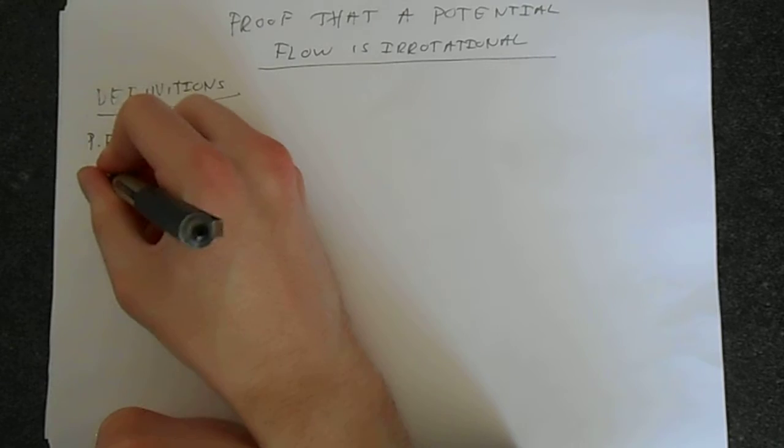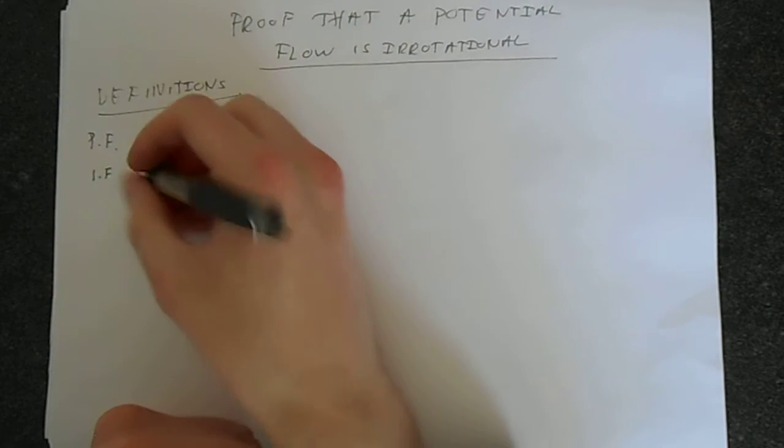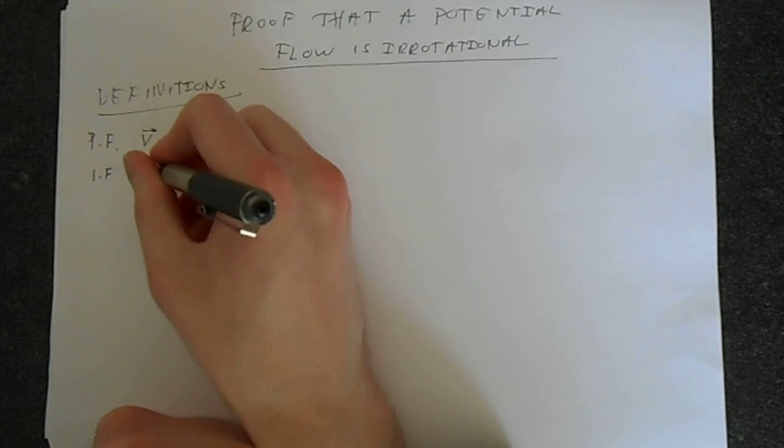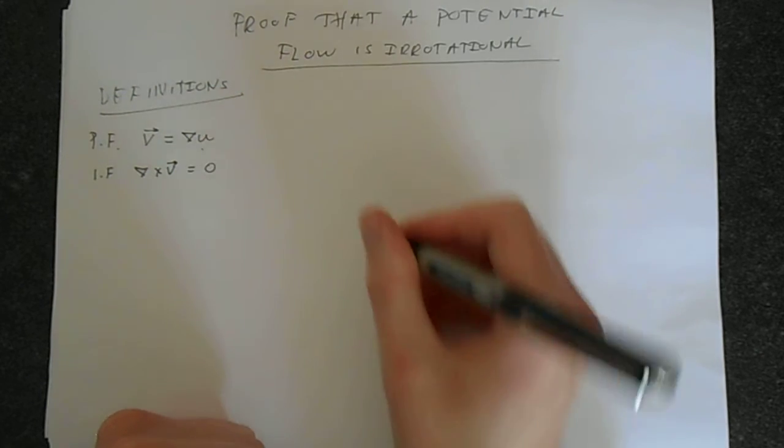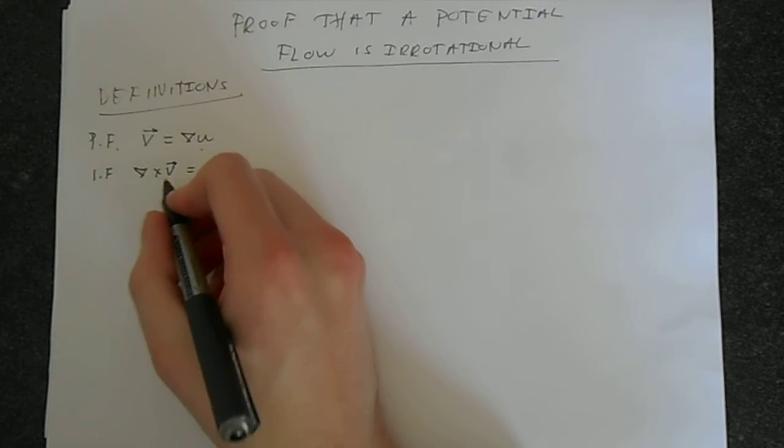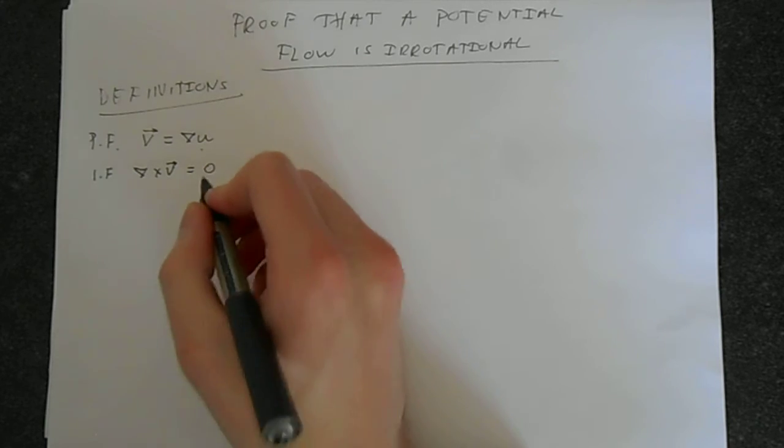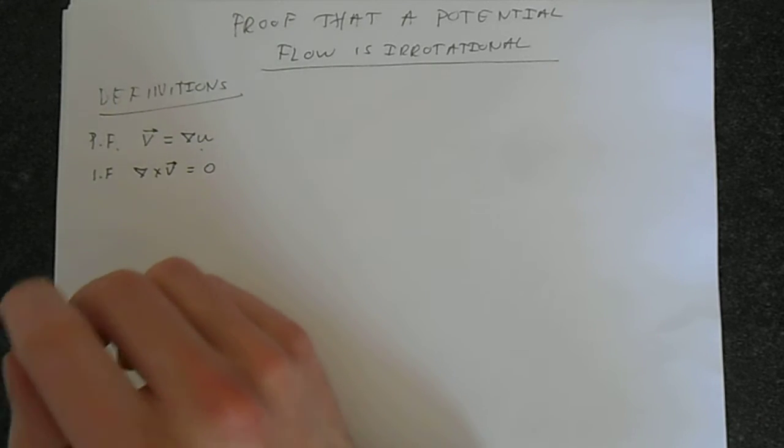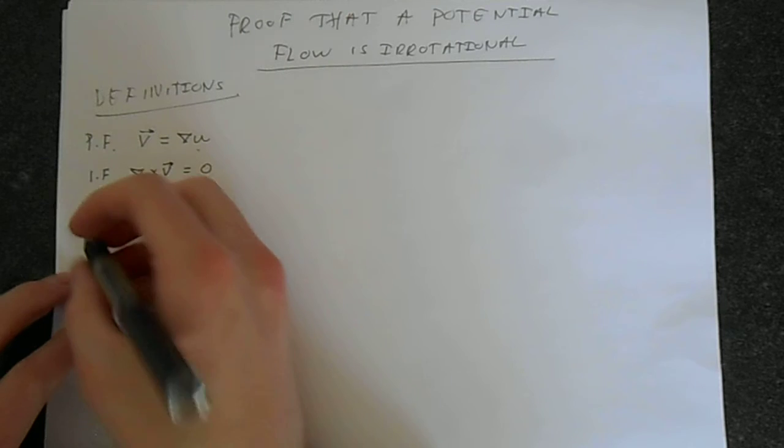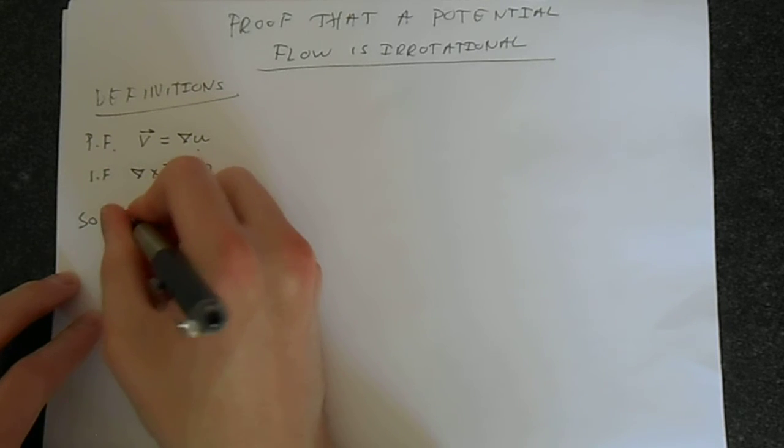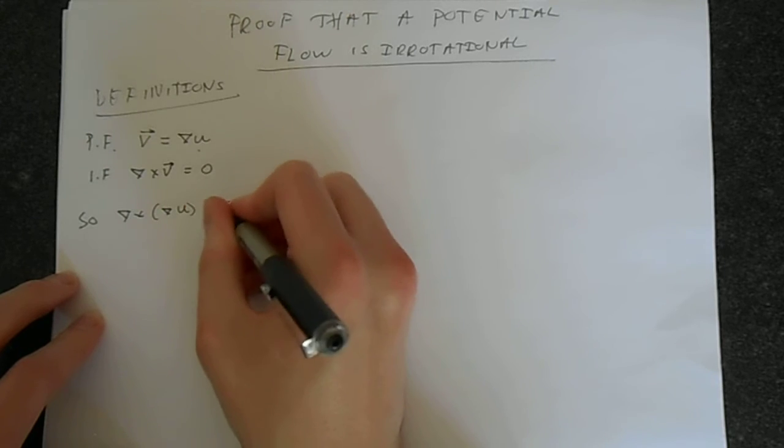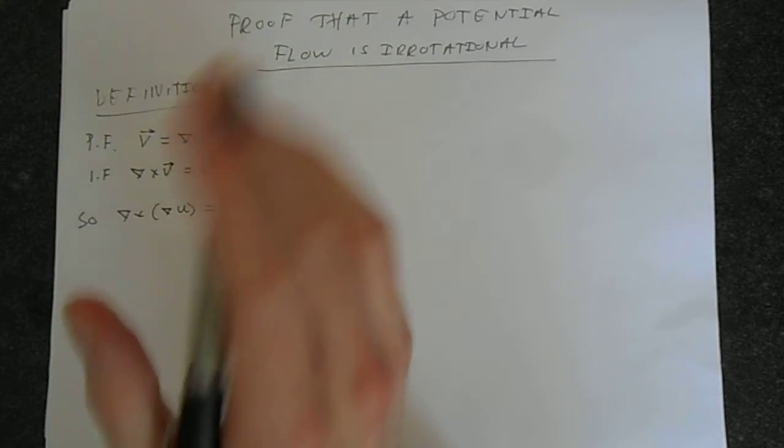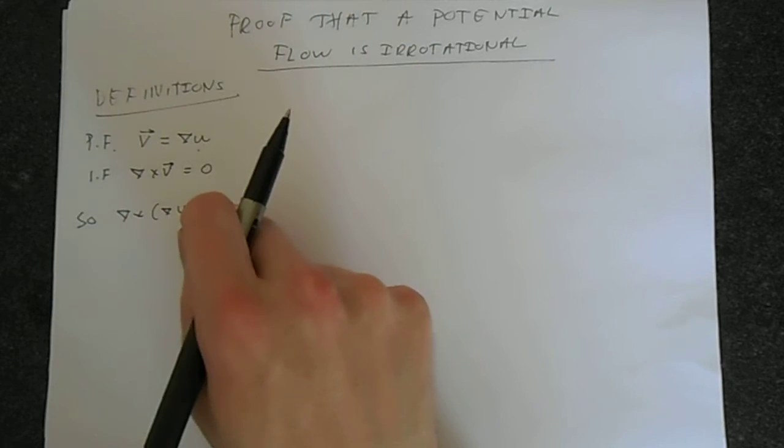An irrotational flow is one such that the curl of this velocity equals zero. So if we take the curl of the velocity field, we get zero for an irrotational flow. So we expect that del cross del u will be equal to zero. So we want to prove this.